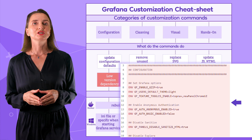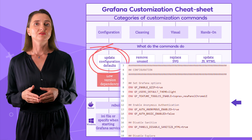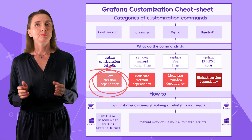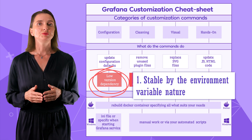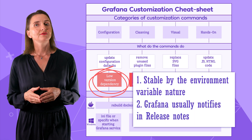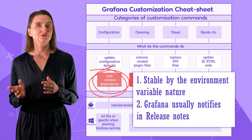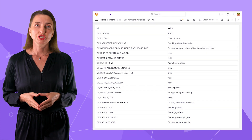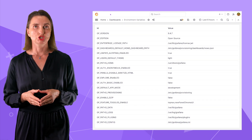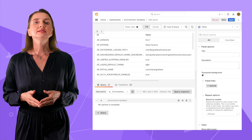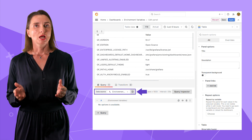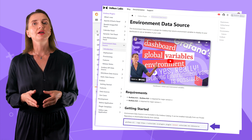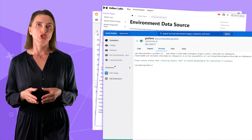Configuration — our file starts with this. Here you can update the Grafana defaults by specifying environment variables. The configuration commands are the most version-stable. Grafana rarely changes the name and meaning of its environment variables, and if anything ever changes, you will most likely see a memo in the version release notes. All or a subset of environment variables can be displayed on a Grafana dashboard using the built-in table visualization. If I open it in edit mode, you can see I employed the environment data source, which I installed manually from our private repository. On the environment data source page, you can find the installation command to copy and run in the Grafana Docker terminal.